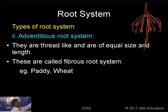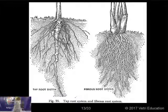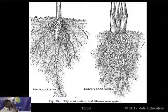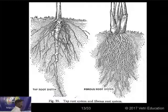Here you can see two excellent diagrams. The first one shows the tap root system, where the main root gives secondary and tertiary roots. The second one shows the fibrous root system, where from the base of the stem you can find a bunch of roots of the same size and same structure. This is found in monocot plants.